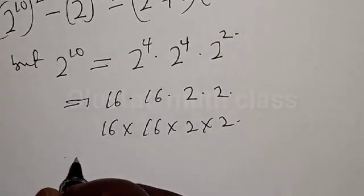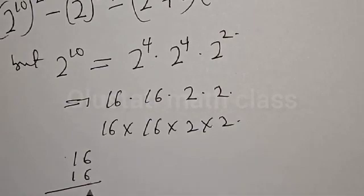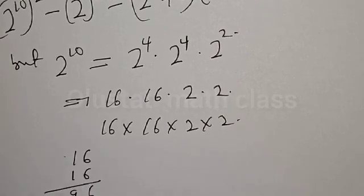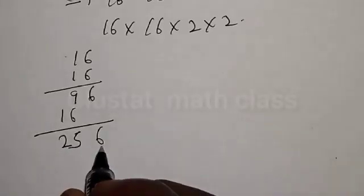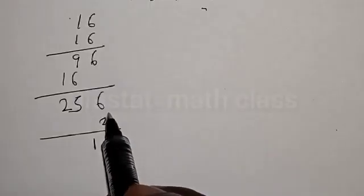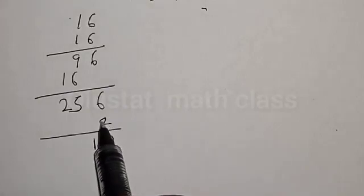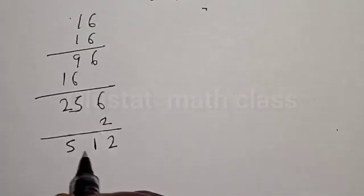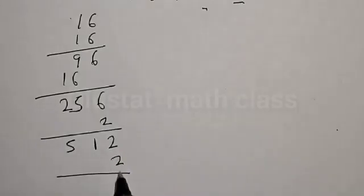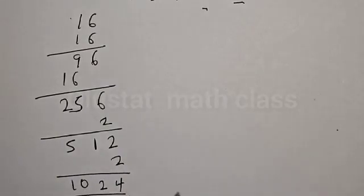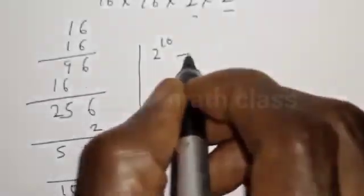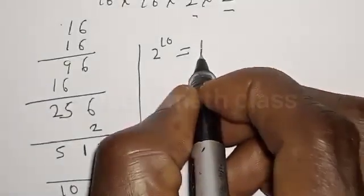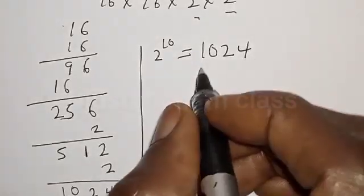Now let's see: 16 times 16. We have 6 times 6 that is 36, carry 3; 6 times 1 is 6 plus 3 is 9; 1 times 6 is 6; 1 times 1 is 1. This gives 256. Now multiply by 2 times 2: we get 2 raised to power 10 is equal to 1024.